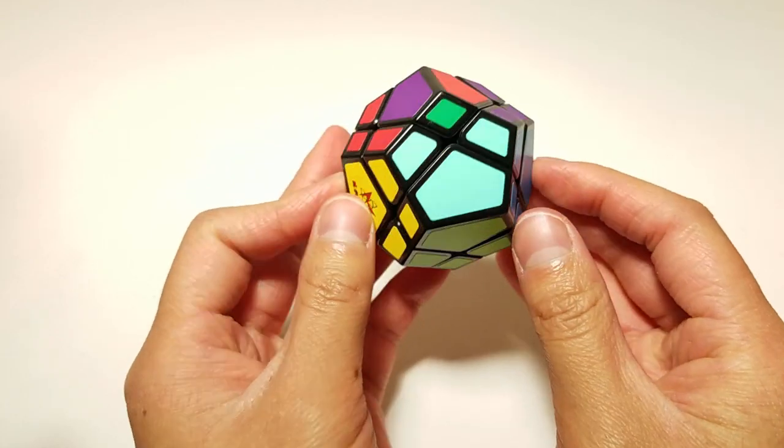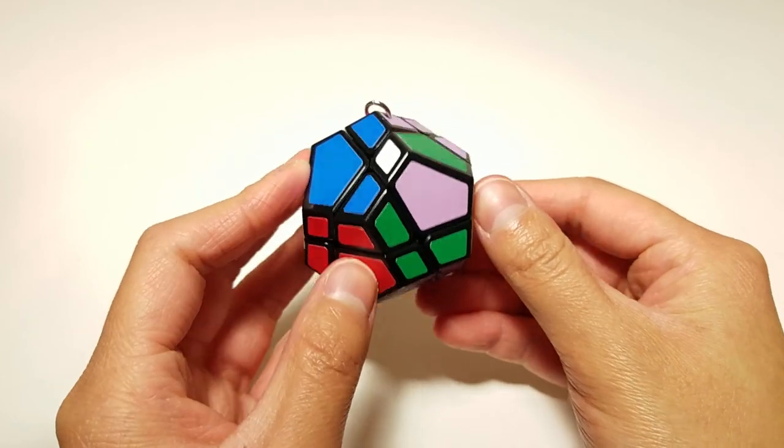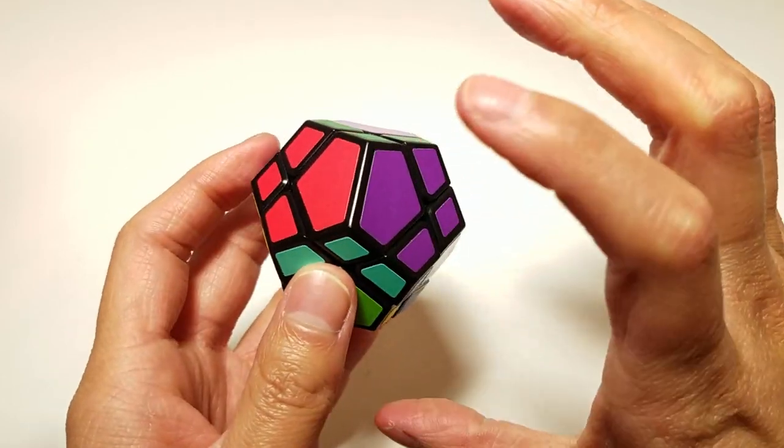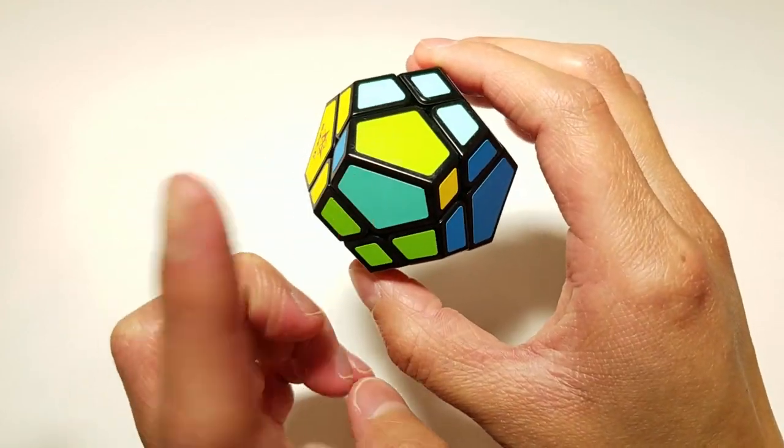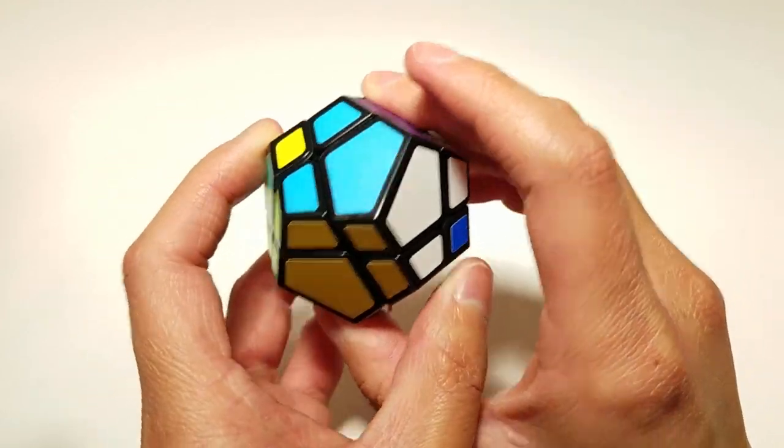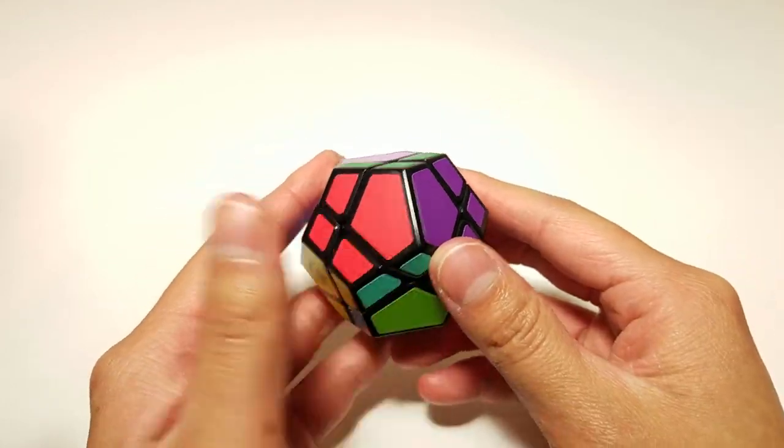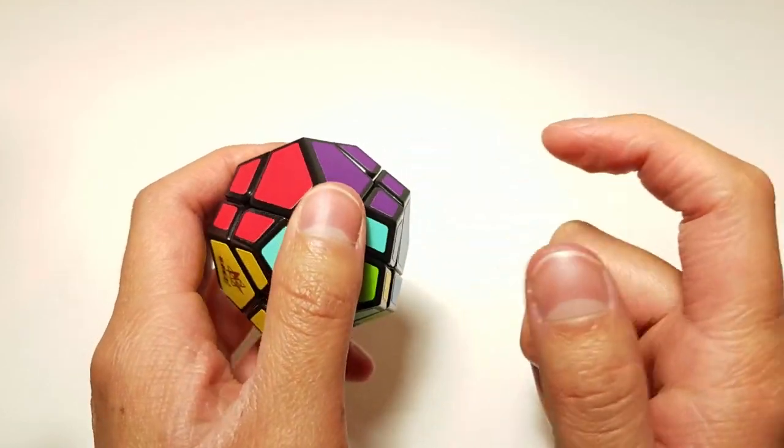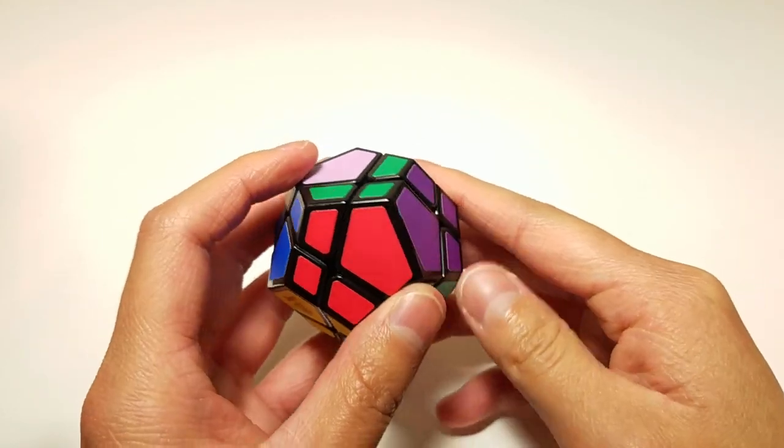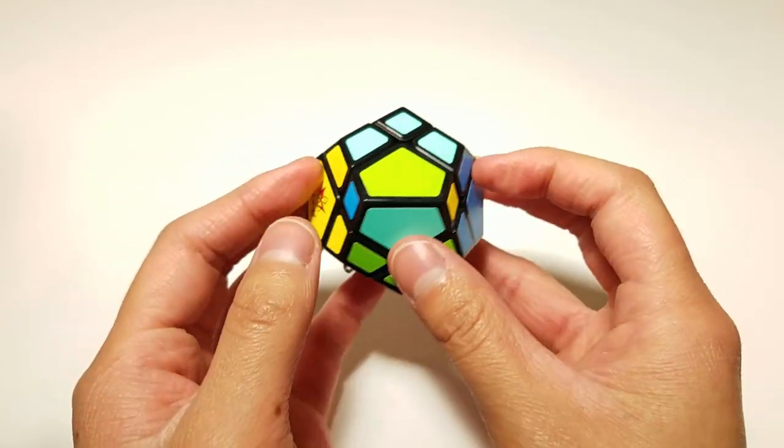So you can either have the two centers that are solved be adjacent, or they can be on the opposite. So now we have the solved centers opposite and then the two weird ones also opposite. So if you had the first case where you had the adjacent corners, just sit tight for a second because I'm going to do an algorithm that will place the pieces into the adjacent parity.